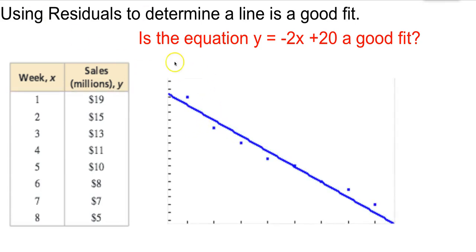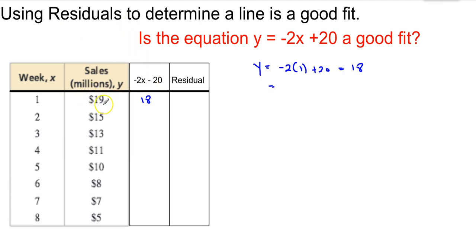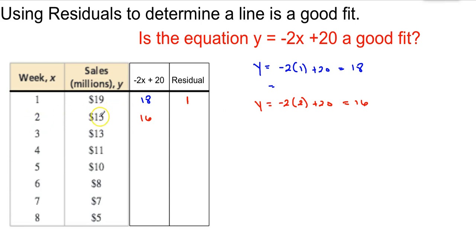Looking at this model again, x = 1 has a value of 19 on the scatter plot — the actual data — but a value of 18 on the model. The difference between the actual scatter plot and the equation is 1, so that is your residual. To find the residual for week 2: y equals negative 2 times 2 plus 20. Negative 4 plus 20 equals 16. The model has a y value of 16 versus the scatter plot's y value of 15. So 15 minus 16 equals negative 1.